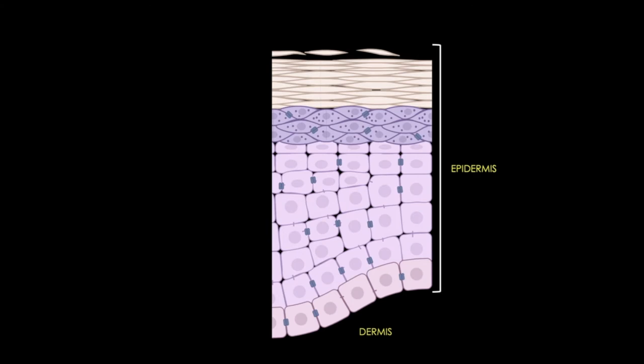Recall that the layer closer to the underlying dermis is the stratum basale, or the basal layer. This is a single layer of germinal cells—cells that can divide—and they rest on the basement membrane, which is attached to the dermis. This is the layer where most of the cells that make pigment are going to be localized.